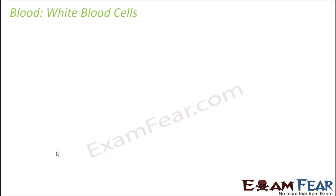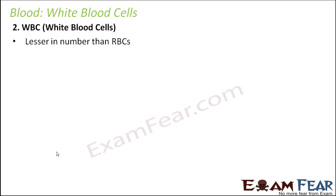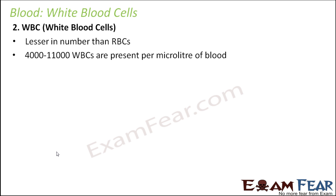The next component of blood is the WBC, that is the white blood cells. WBCs are lesser in number when compared to red blood cells. There are around 4,000 to 11,000 WBCs present per microlitre of blood. Compared to red blood cells which were present in millions, WBCs are present only in thousands. We also saw that red blood cells constituted almost 45% of total blood volume, whereas WBCs in the buffy coat were not even 1%.